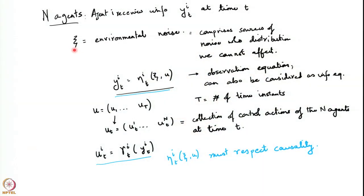In the previous lecture we looked at the intrinsic model of stochastic control, where we showed that one can model a stochastic control problem without actually bringing in the concept of a state of a system. This model is very amenable to describing information structures. In this model, we had what is called the environmental noise, comprising all sources of noise whose distributions we cannot affect — including the initial state, measurement noise, system noise, and so on. The information available at any time is written as a function of the actions chosen in the past and the environmental noise, determining all the information that agent i has at time t.